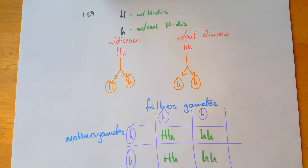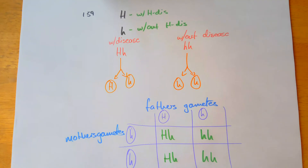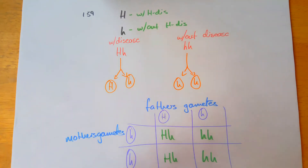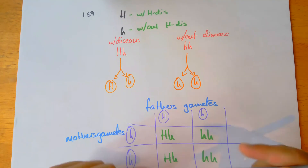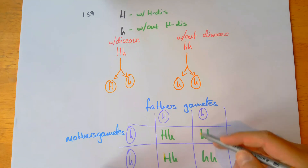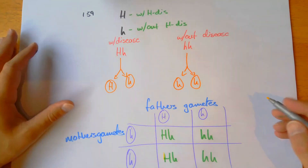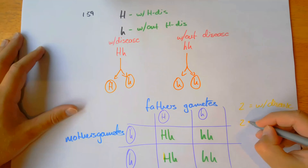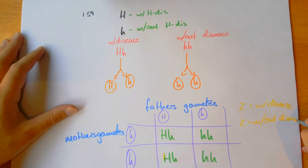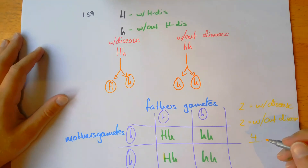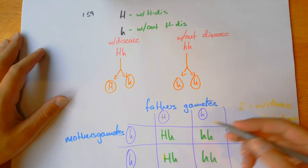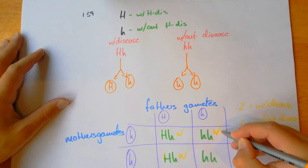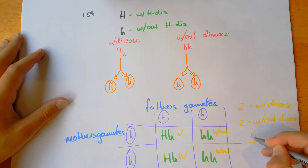Now we identify the phenotypes of these children. We've got a dominant allele here, which means this possible child will have the disease. These two are recessive, so they won't have the disease. So we've got two with the disease and two without the disease — four options in total. The question asks for possible genotypes and phenotypes. So: with the disease, with the disease, without the disease, without the disease — 50% with, 50% without.